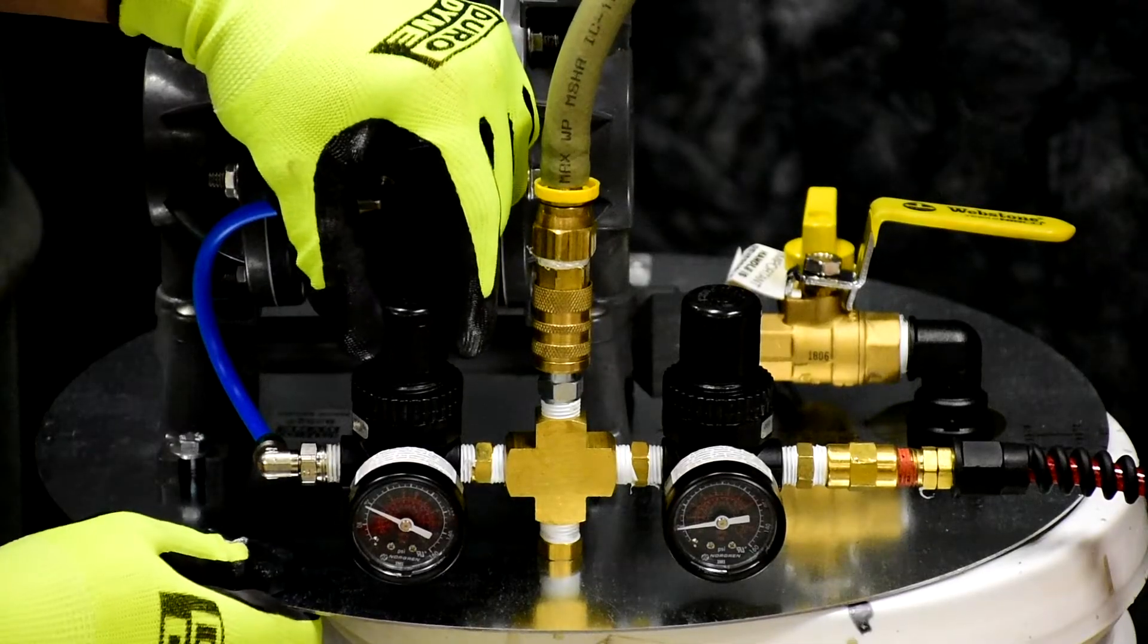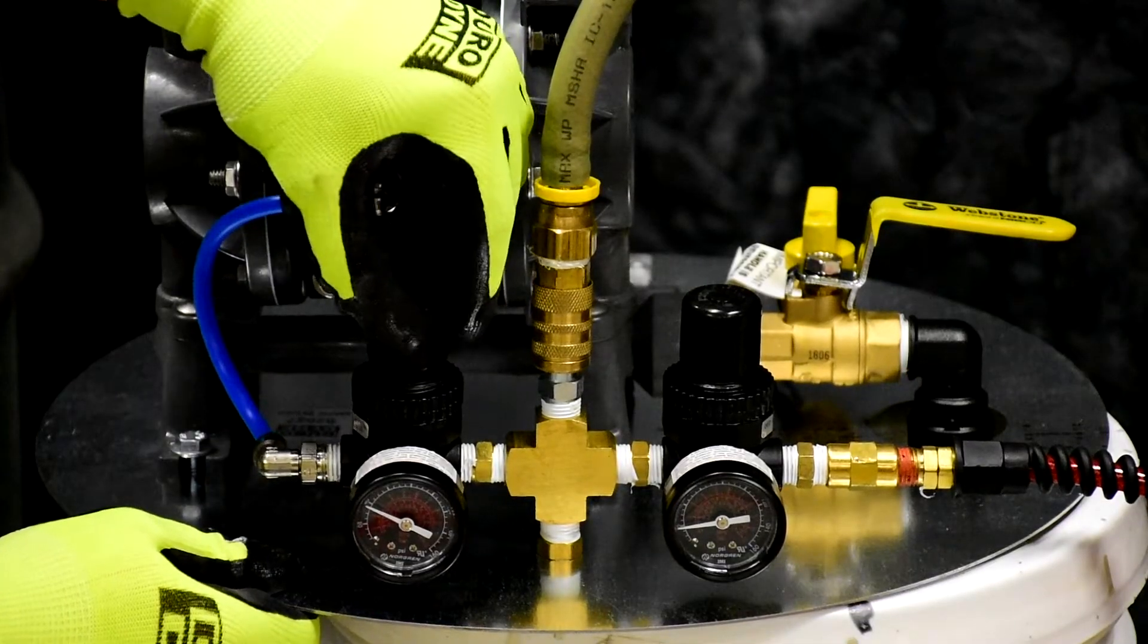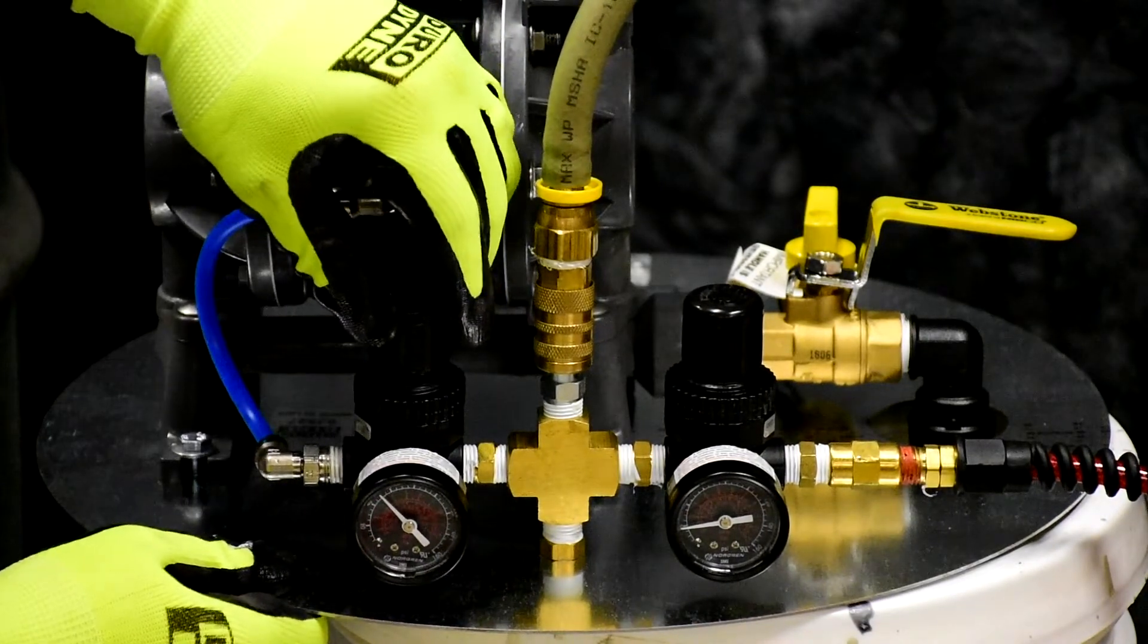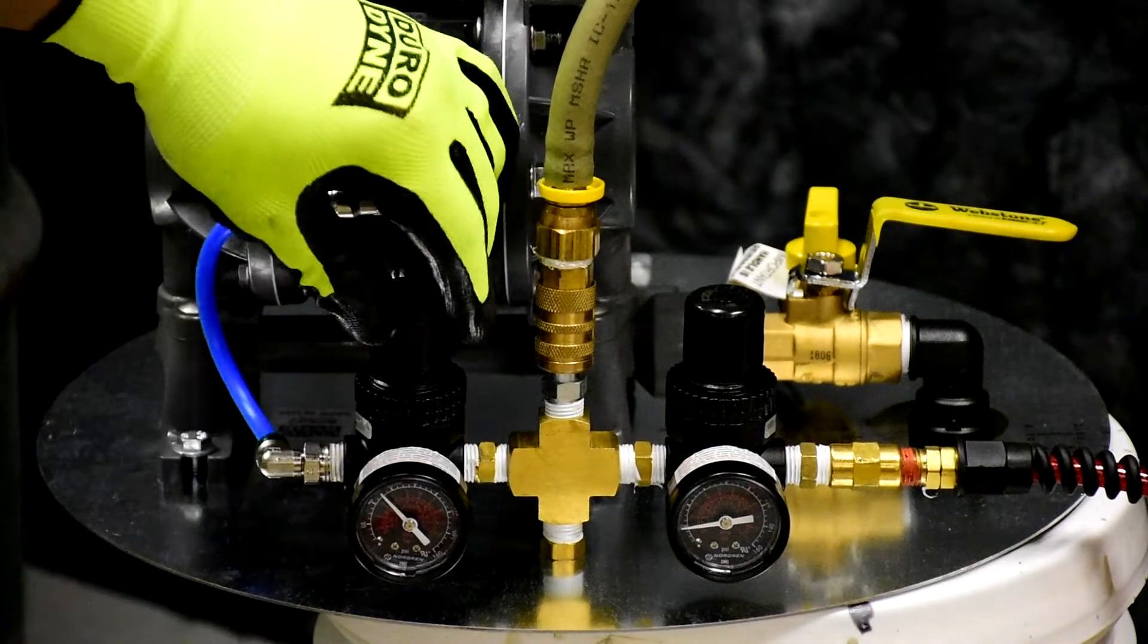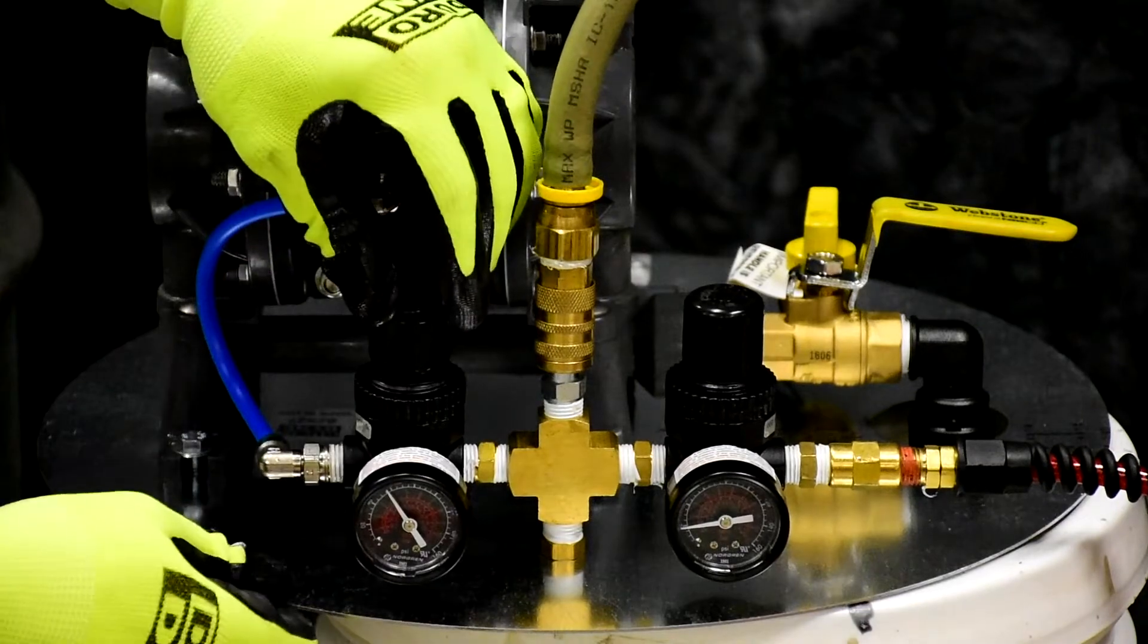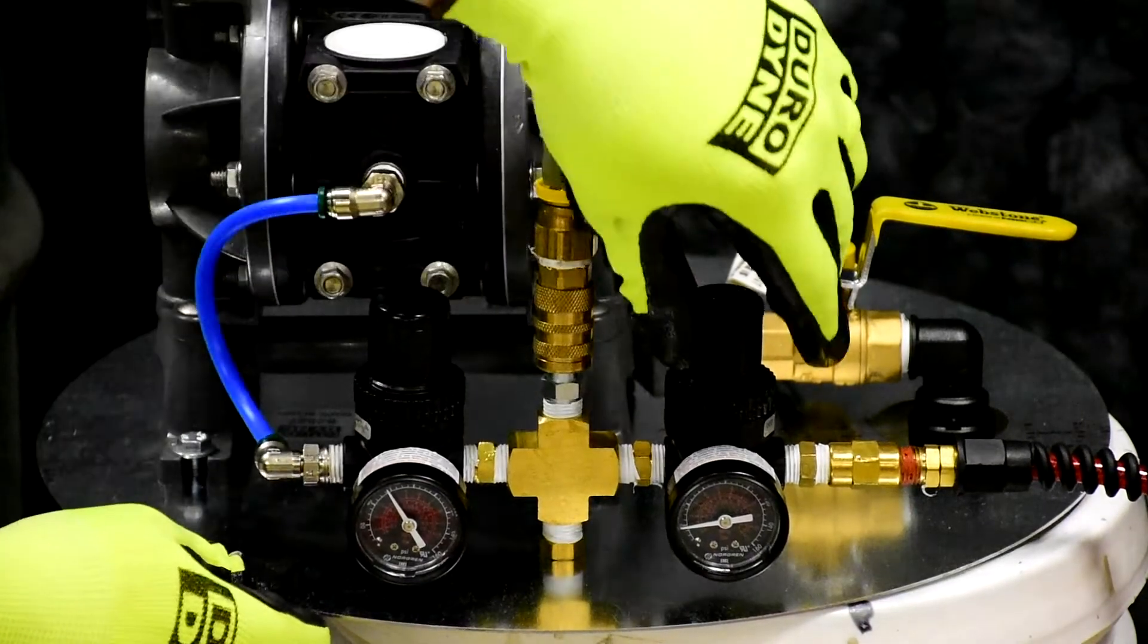To adjust the pressure settings, gently pull up on the regulator knob and turn to the desired pressure. We recommend 60 PSI, however the Super Sprayfast is easily adjusted to meet your needs. Once you have reached the desired pressure, simply push back down on the knob to maintain that setting.